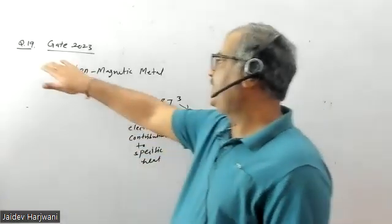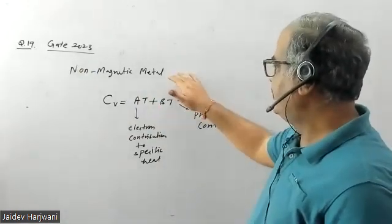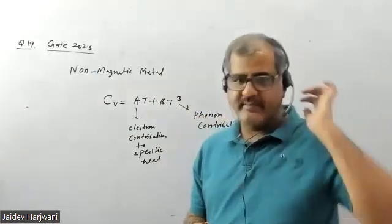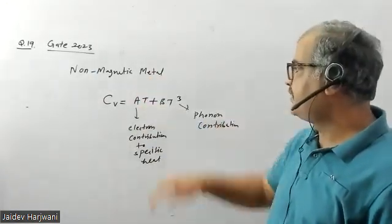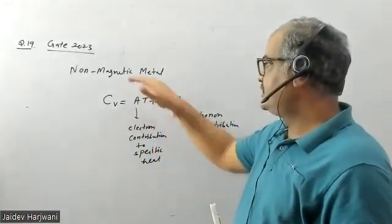Listen, this is question 19 from GATE 2023. They have given some graph, heat capacity versus temperature graphs for metals. They're asking, the metal is non-magnetic, so which of the following graph is corresponding to the specific heat of the matter?